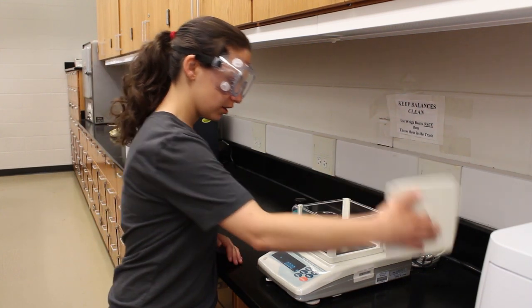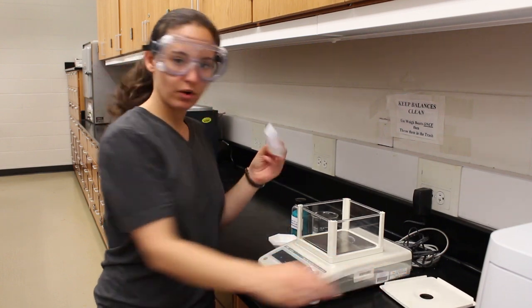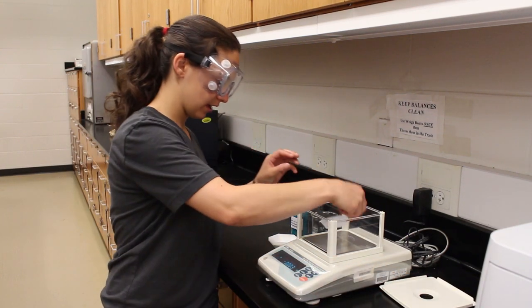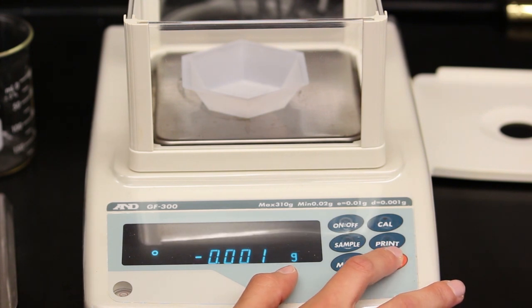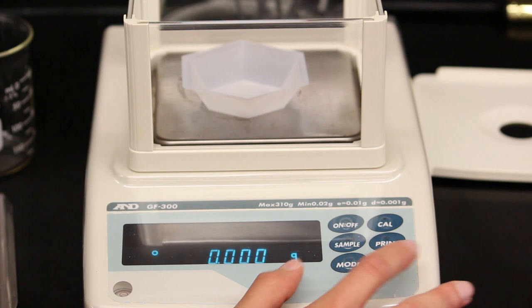To weigh a substance, you'll need to take a plastic weighing boat and place it on the scale. Then press the re-zero button, or the tare button, so that the weighing boat is 0.000 grams.